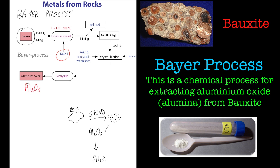All that process just to make aluminium oxide - we still want to get the aluminium element out. We've got to a really useful product though: we've got this nice white powder called aluminium oxide.